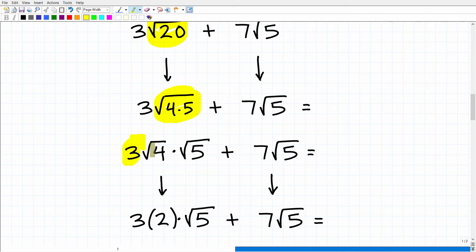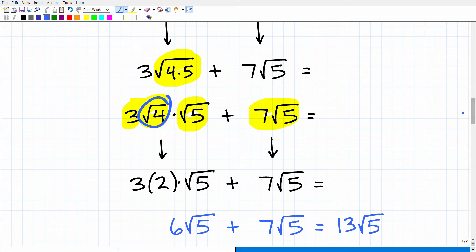And then, of course, we can break up the square root of 4 times 5, these factors, as their own individual square roots. So what we have here is 3 times the square root of 4 times the square root of 5 plus, of course, 7 square root of 5. Now, the advantage of doing that is that we can actually take the square root of 4. Okay, so the square root of 4 is 2.